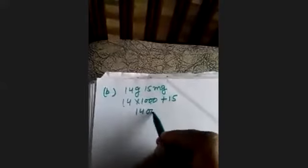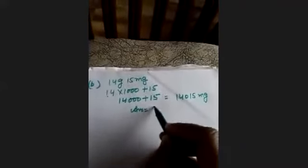Part B: 14 grams and 15 milligrams. 14 × 1000 + 15 = 14,000 + 15 = 14,015 milligrams. Our answer is 14,015 milligrams.